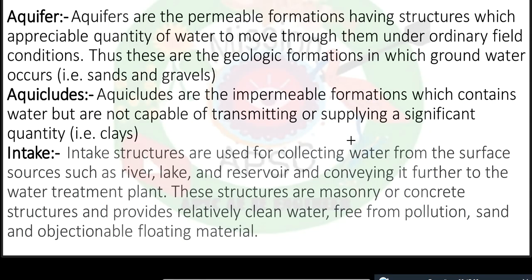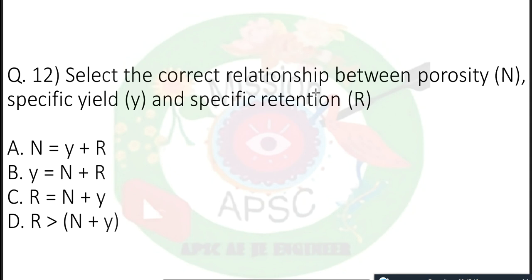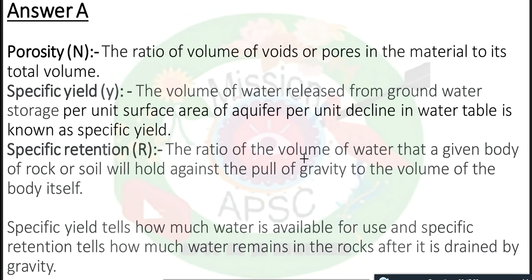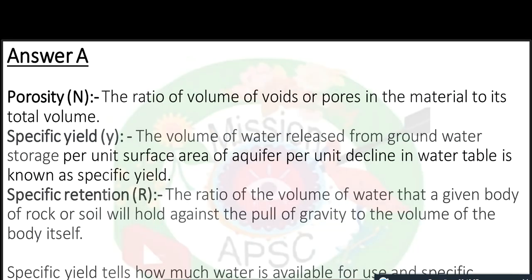Question number 12: Select the correct relationship among porosity, specific yield, and specific retention. Porosity is the ratio of the volume of voids or pores in the material to the total volume. Specific yield is the amount of water which is released from groundwater storage per unit surface area of aquifer per unit decline in water table — basically how much water is available for use. Specific retention is how much water remains in the rock after it has drained by gravity. The correct relationship is: Porosity = Specific Yield + Specific Retention.